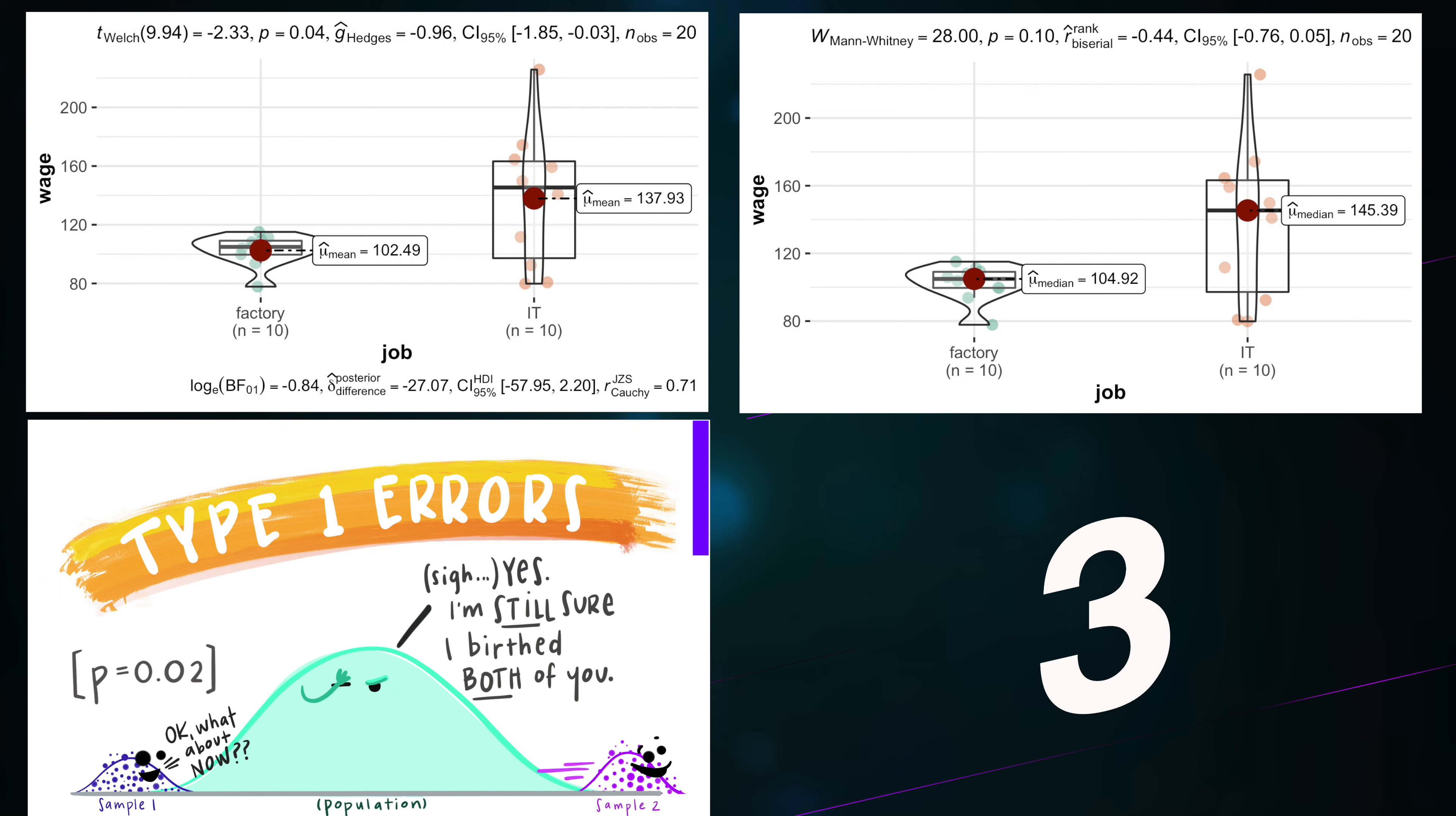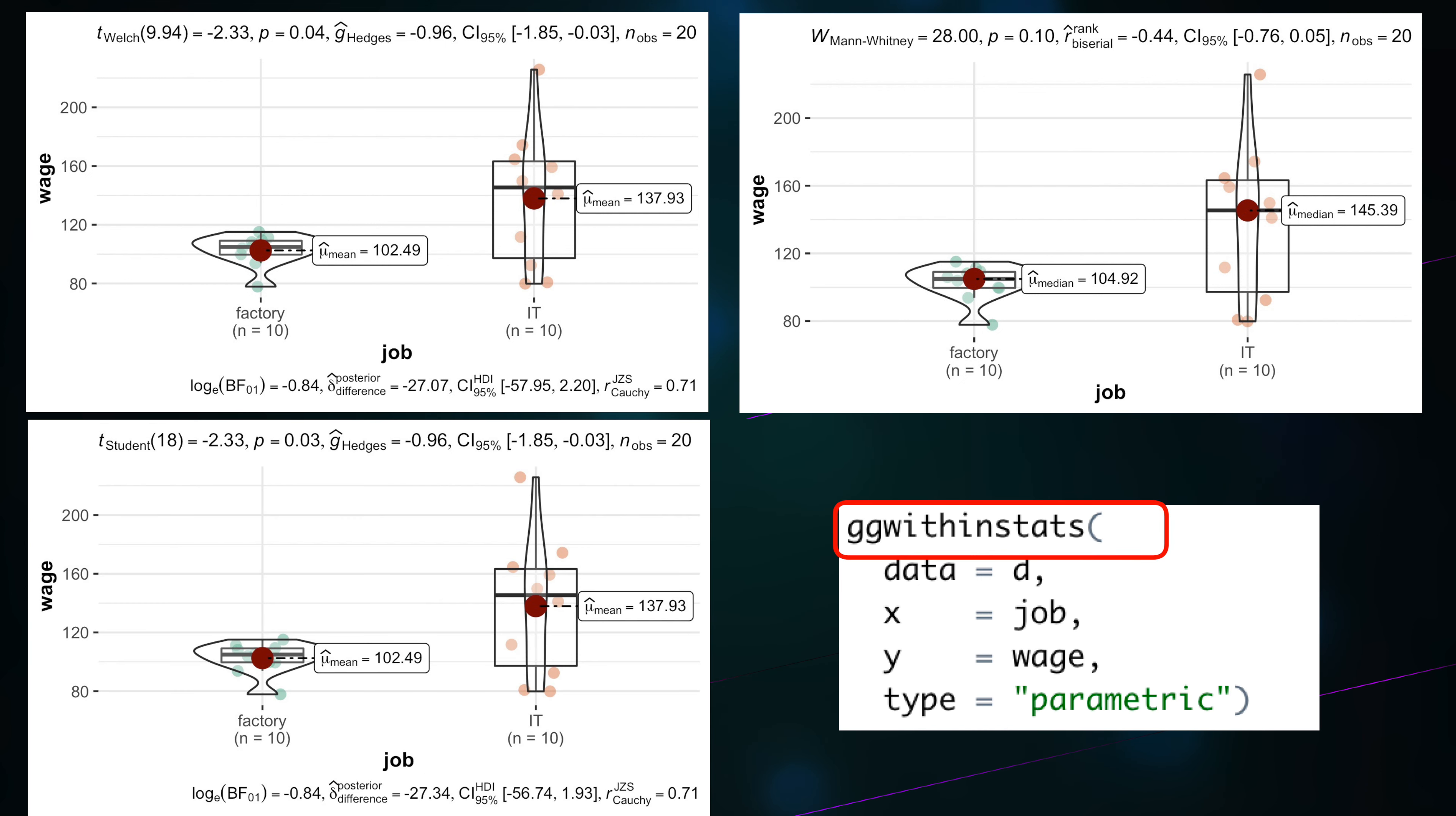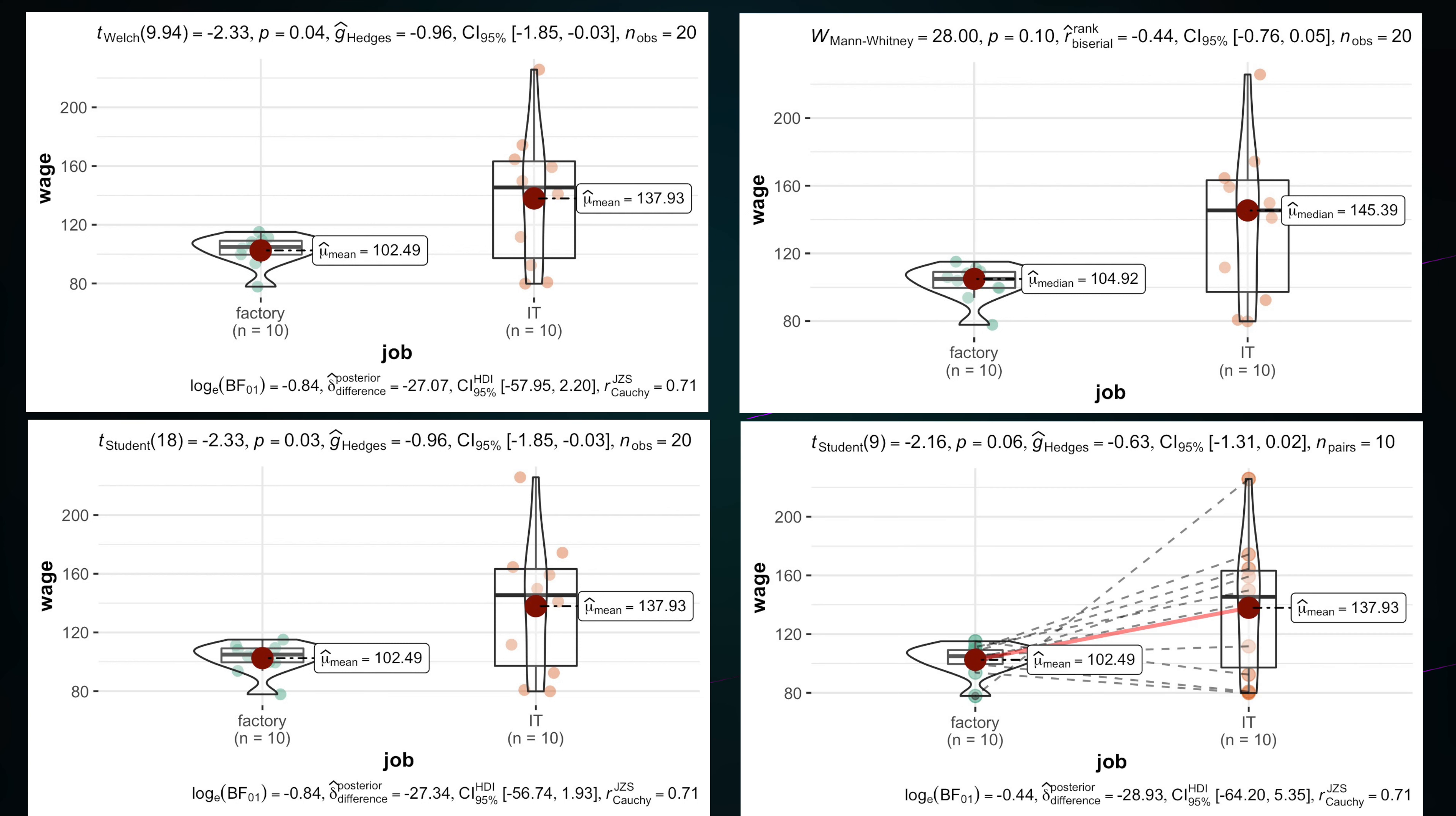But that's not all. We could be even more wrong if we took a paired t-test, because we would test a completely different null hypothesis. Namely, that exactly the same 10 factory workers change their job to IT and compare their salaries before and after this change.